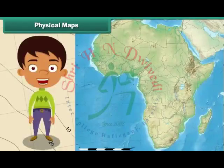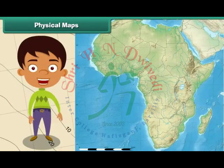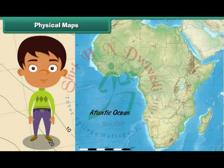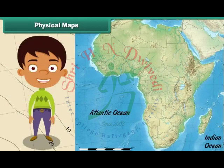For example, the physical map of Africa shows the African continent located between the Atlantic Ocean on the west and the Indian Ocean in the east. The African continent is also shown as sharing its northeast border with the Red Sea.